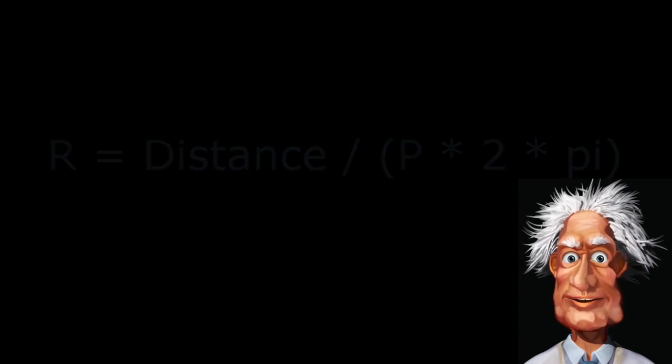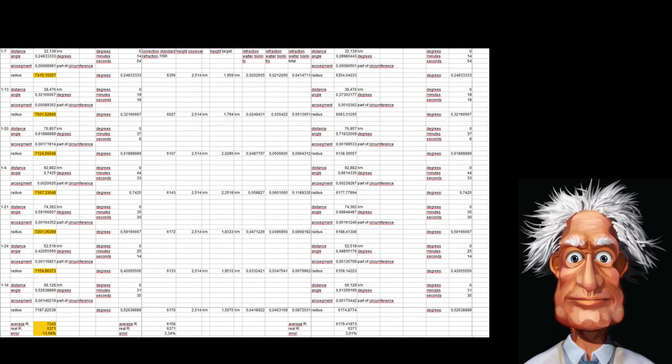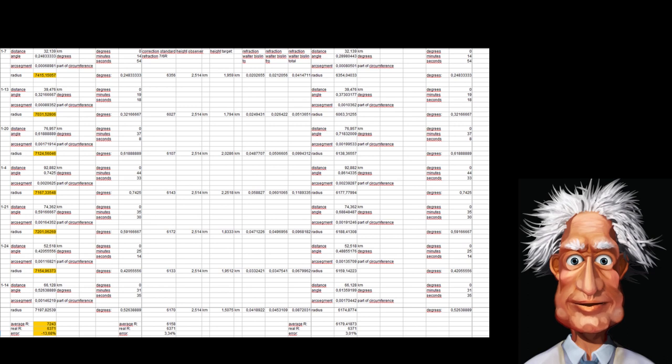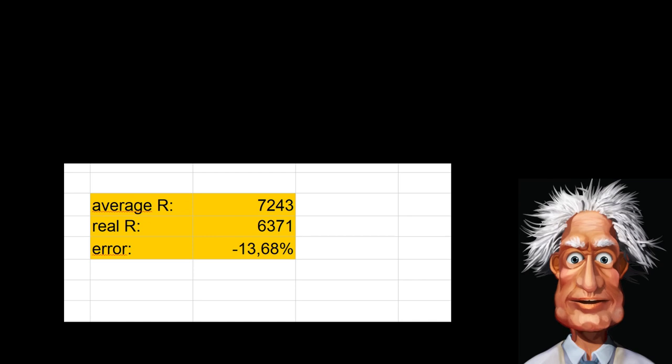There were seven reciprocal zenith angle measurements taken, and if you calculate the radius resulting from each of these measurements, you get these results. The average radius of the earth is calculated to be 7,243 kilometers. That's about 13% more than the generally accepted number of 6,371 kilometers.